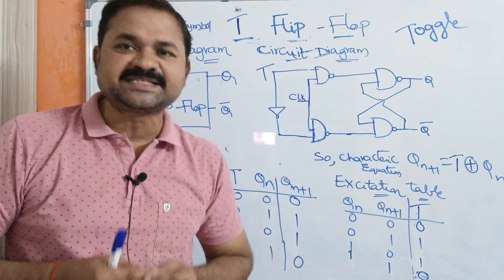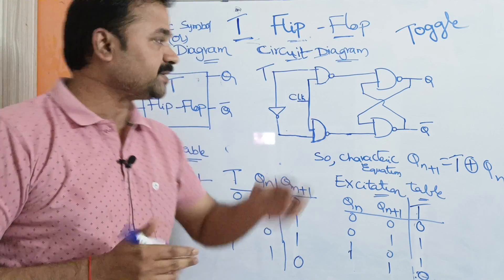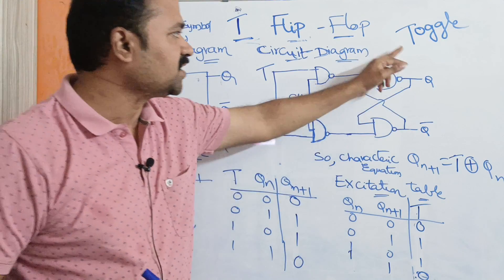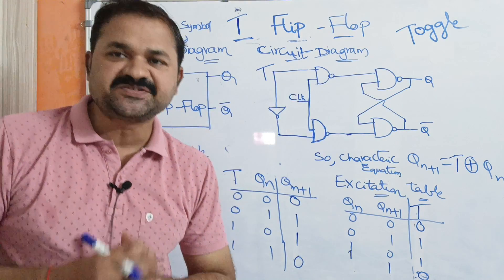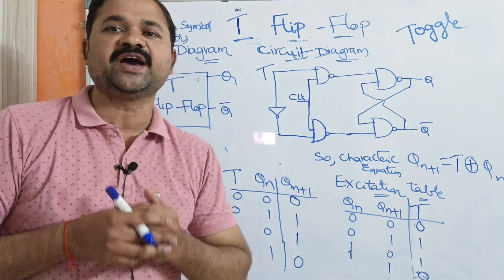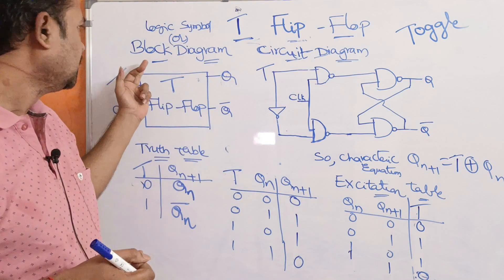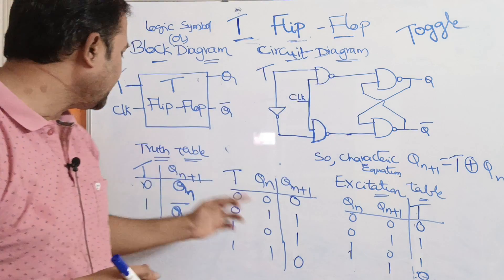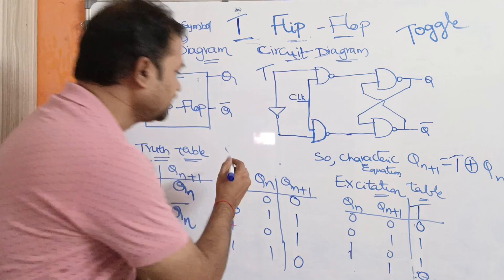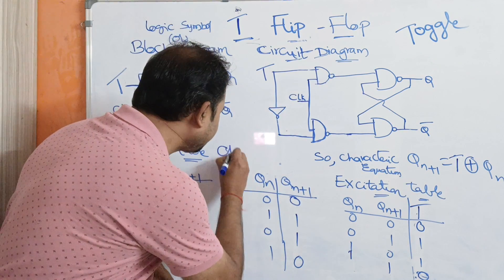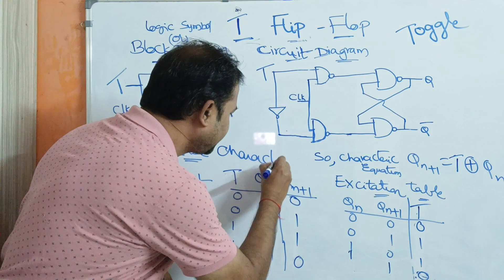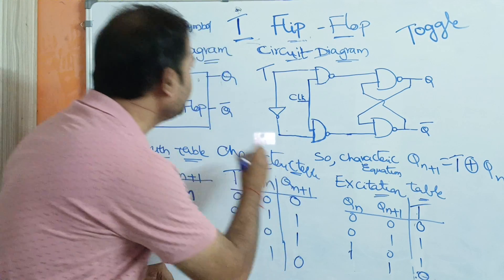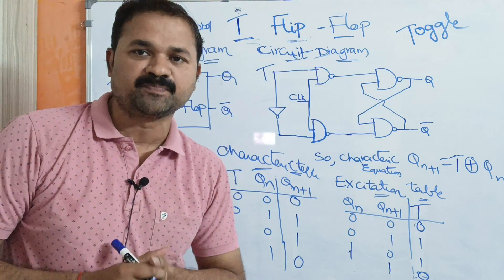Now let us discuss the T flip-flop. T stands for toggle. In this video we are going to discuss the logic symbol or block diagram, circuit diagram, truth table, characteristic table, characteristic equation, and excitation table of the T flip-flop.